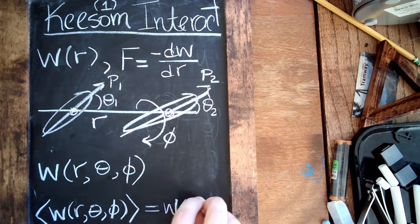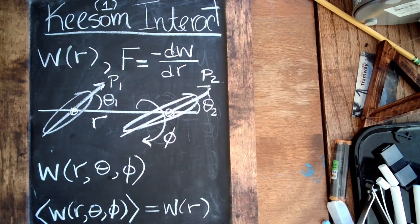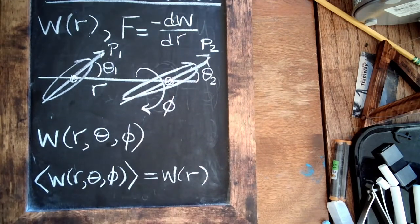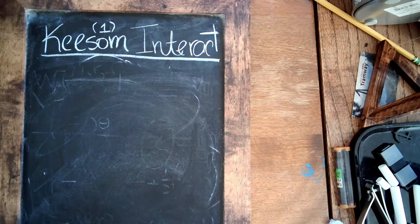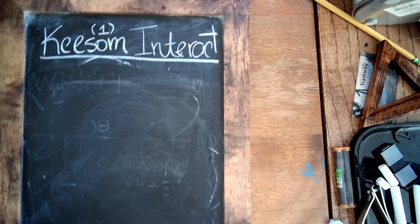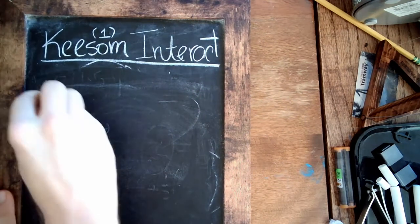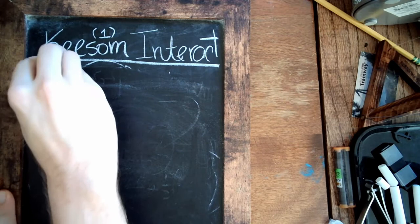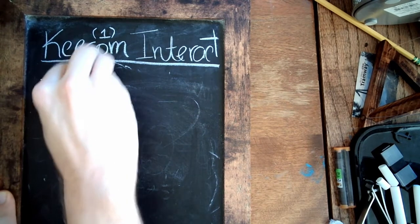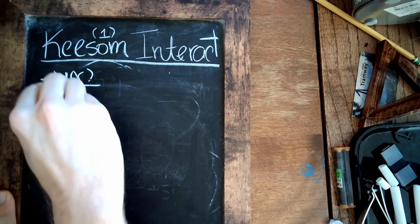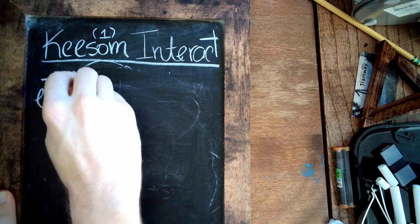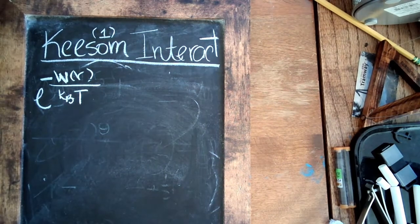So we need to figure out how can we perform this average over the angles. So in trying to compute this average over the angles, we're going to first talk about the Boltzmann factor. So that would be taking the angle-averaged interaction energy and dividing by kbT, which is thermal energy.